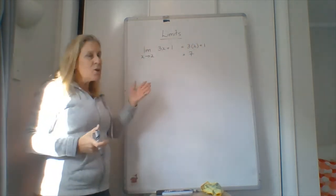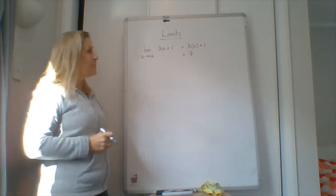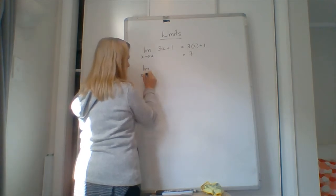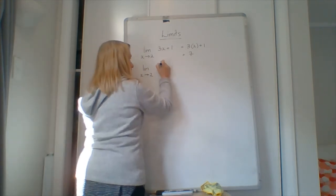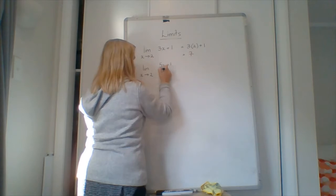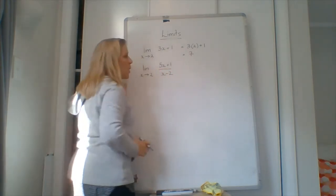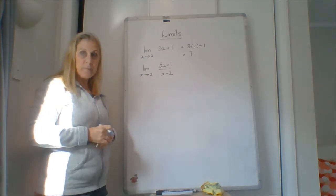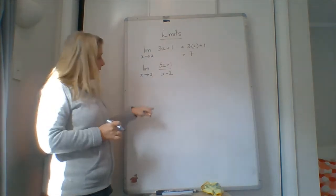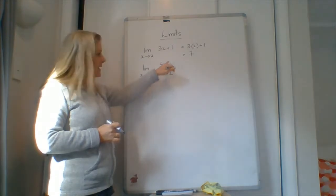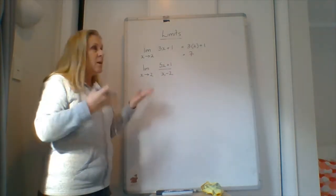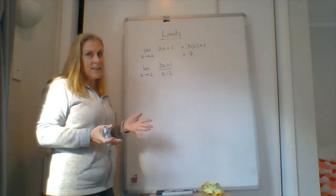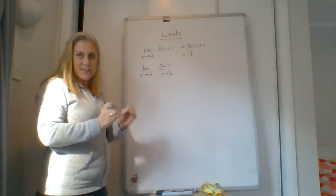Okay and there are lots that are very easy and straightforward like that. The problem is that there are lots that are not. So if we've got this one, what happens when we put 2 in? We get 11 over 0. Can't have a denominator of 0, therefore it doesn't exist. So the value doesn't exist.